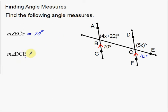Now let's go to the second one — DCE. Where is that angle? D here, C, and then E. So we're looking for this angle right here, which they tell us is 5X degrees. I've got to figure out what X is first, and then after I figure out what X is, plug it back in to find the angle measurement. I have to look around to see if this angle has any relationship with anything else.